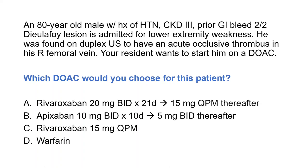Your resident astutely tells you that he wants to start this patient on a DOAC. The question is, which DOAC would you choose for this patient? Would you choose A, rivaroxaban with a 20-milligram BID load followed by 15 milligrams thereafter? Would you choose B, apixaban with a load followed by 5 milligrams thereafter? C, rivaroxaban maintenance dosing at 15 milligrams once a day? Or D, warfarin?